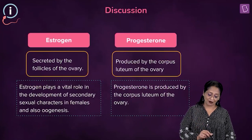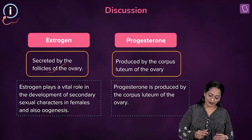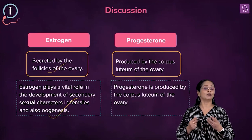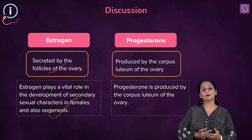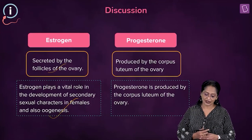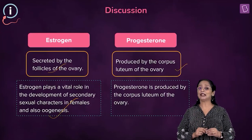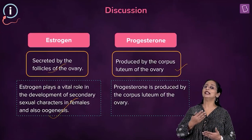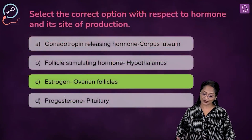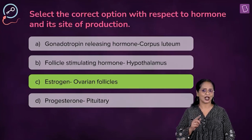Estrogen is secreted by the follicles of the ovary. Estrogen, the female sex hormone, helps in the development of secondary sexual characters of the female as well as oogenesis — the formation of the female gamete. Estrogen also helps in rebuilding the endometrium of the uterus. Progesterone, also called the pregnancy hormone, is produced by the corpus luteum of the ovary, and helps in maintaining the pregnancy.